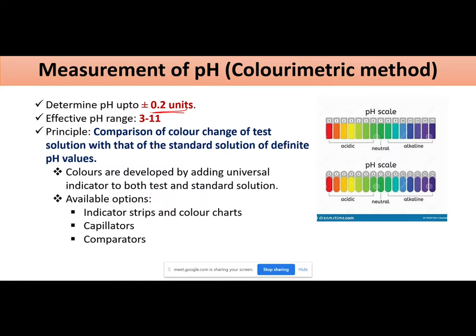You have standard colors and standard solutions. In comparison, your test solution shows what color it is showing. These colors are determined. One example you have done is the indicator strip, where you have your color charts. But on a larger scale, when you have high volume containers and high volume solutions present where you don't directly see pH, there you will use either capillators or comparators.